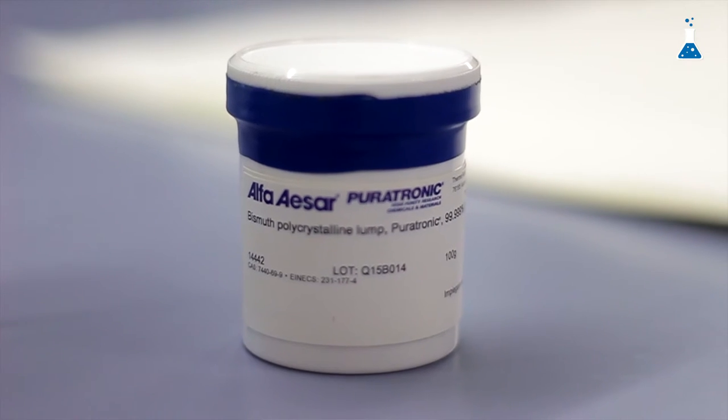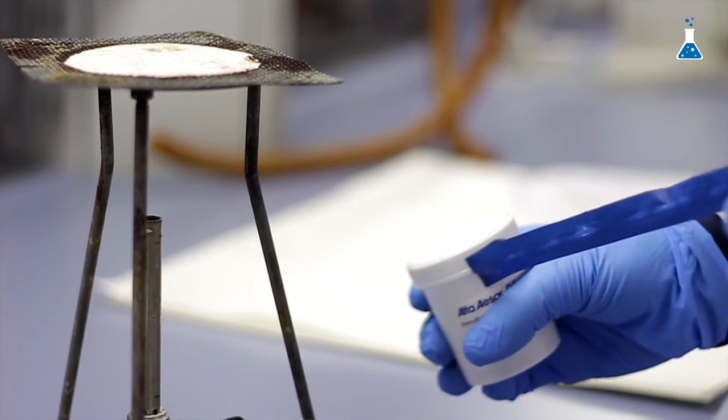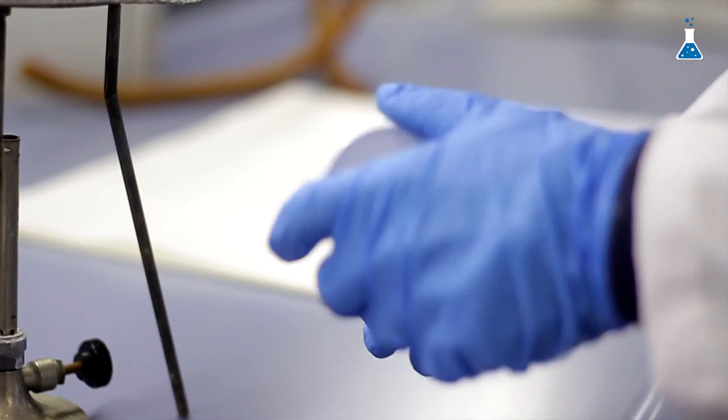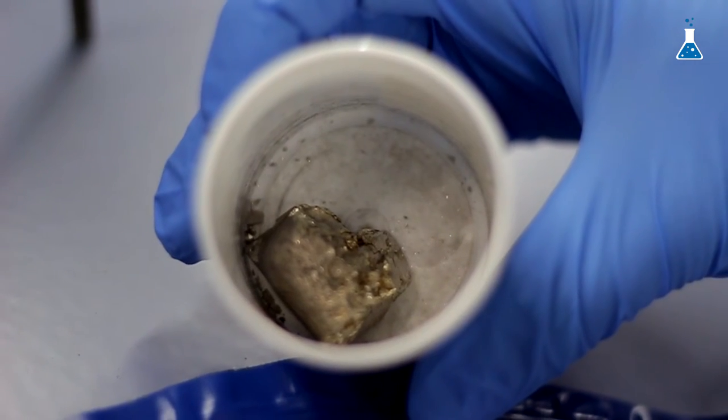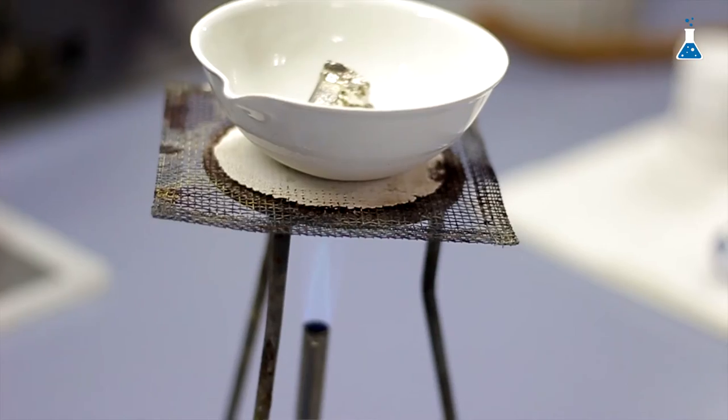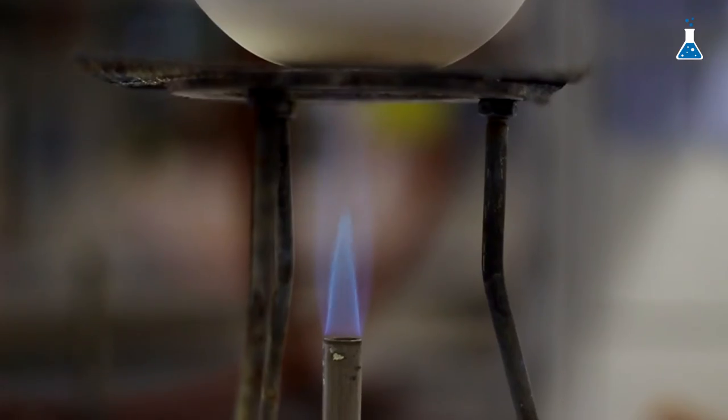For this first part of the experiment, we have purchased bismuth metal in high purity in order to obtain results that are more accurate. The first step of the experiment consists of melting down the metal in this crucible by heating up with the Bunsen burner.